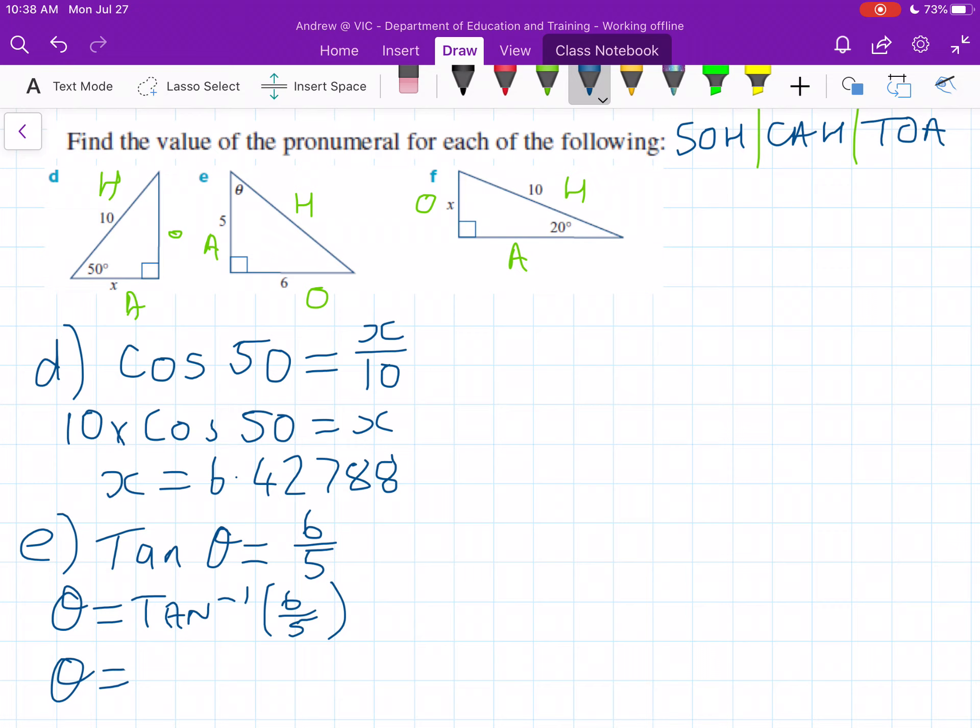Finally we have this one. We've got an angle and we need to work out our opposite from our hypotenuse, so this will be using sine for this one. Our sine of 20 is equal to x over 10.